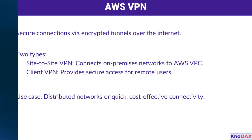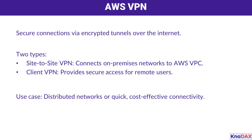First up, AWS VPN. This option provides secure, encrypted tunnels over the internet, connecting your on-premises networks to AWS. AWS VPN comes in two flavors: site-to-site VPN for linking corporate networks to AWS VPCs, and client VPN for giving remote users secure access. It's particularly suited for distributed networks or when you need quick, cost-effective connectivity — a great choice for organizations looking for security without a heavy investment.